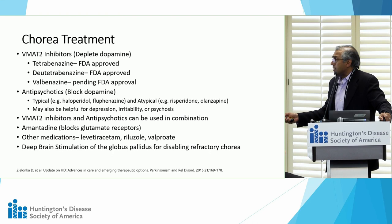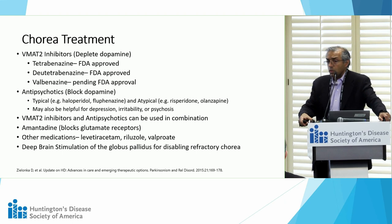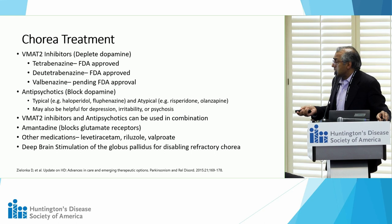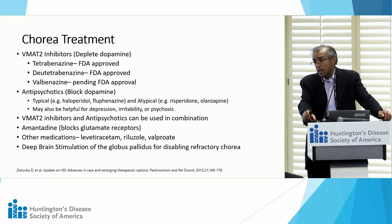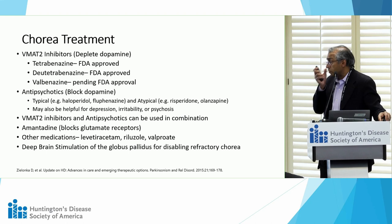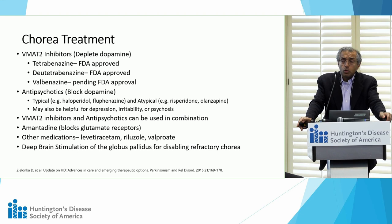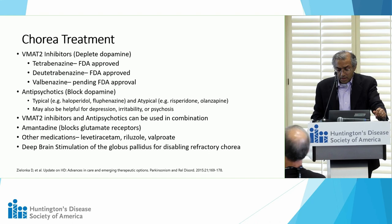For patients with severe refractory chorea not responding adequately to treatments, we consider deep brain stimulation — a surgical procedure implanting electrodes in the brain connected to a pacemaker-like device to block abnormal signals and reduce chorea. DBS can be helpful for severe, disabling, refractory chorea. However, some data suggest it may worsen cognition, and one must be sure it doesn't cause excessive slowness, worsen gait, or create other motor problems. Deep brain stimulation is not without risks since you are operating on the brain.